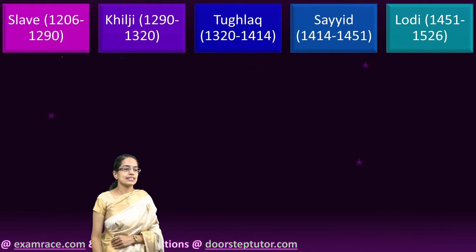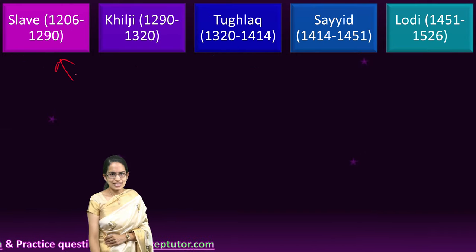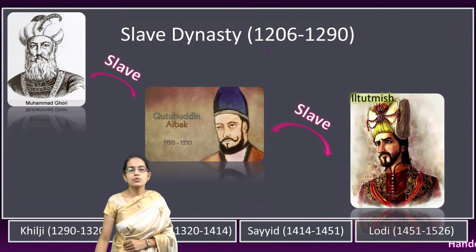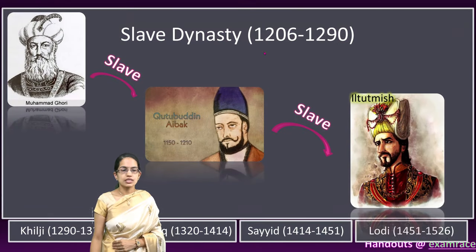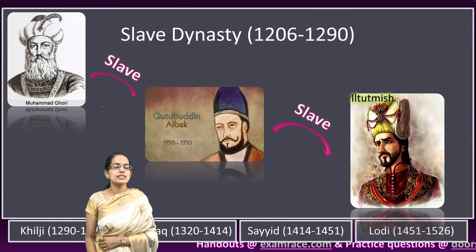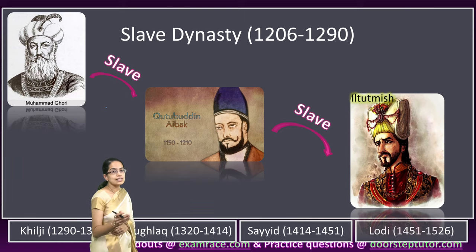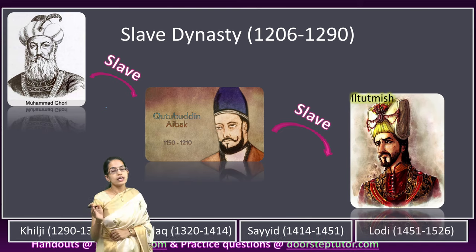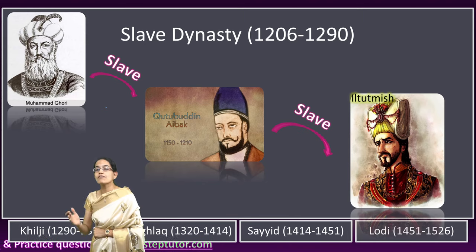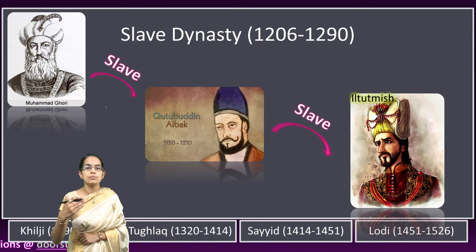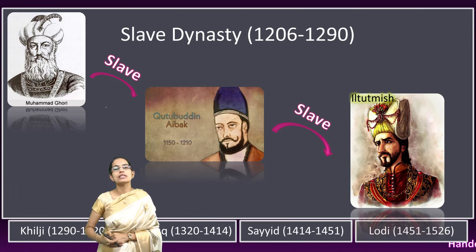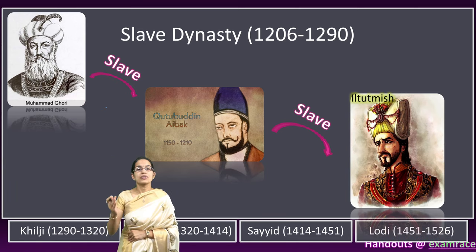Among the Delhi Sultanate, the first dynasty was the Slave dynasty, which remained in power from 1206 to 1290. Mohammed Gauri invaded India and, interestingly, the slave of Mohammed Gauri rose to power — he was Qutb-ud-din Aibak, with whom the Slave dynasty started. Later on, the slave of Qutb-ud-din Aibak rose to power, and he was Iltutmish.